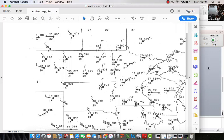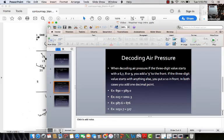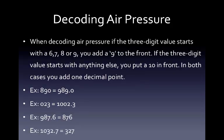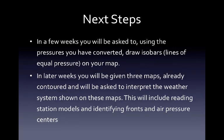As usual, if you have questions, please email me. Before I get to that, however, just to walk you through the next steps—once you've decoded your pressure, like I said before, you're going to be drawing isobars, lines of equal pressure, on your map.